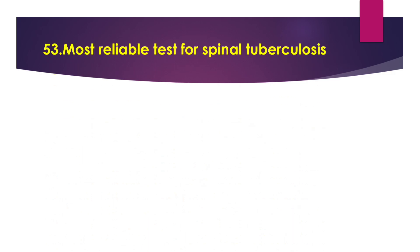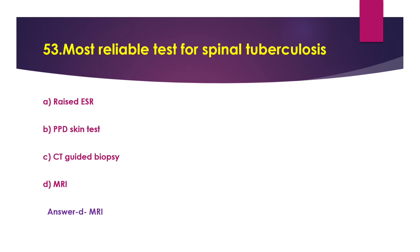Question 53: Most reliable test for spinal tuberculosis. Option A: X-ray/ESR. Option B: PPD skin test. Option C: CT guided biopsy. Option D: MRI. The answer is option D, MRI. Magnetic resonance imaging is the criterion standard for evaluating disc space infection and osteomyelitis of the spine, and is most effective for demonstrating the extension of disease into the soft tissue and the spread of tuberculosis debris under the anterior and posterior longitudinal ligaments.